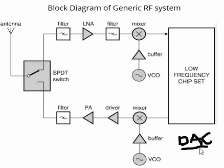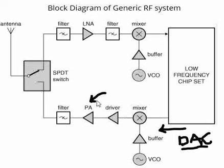The digital-to-analog converter generates the analog signal, which is mixed using a mixer with a VCO, and this is amplified using a power amplifier — mentioned as PA here. Any unnecessary high-frequency data other than what we require, basically the harmonics, are filtered out and then transmitted using the antenna.